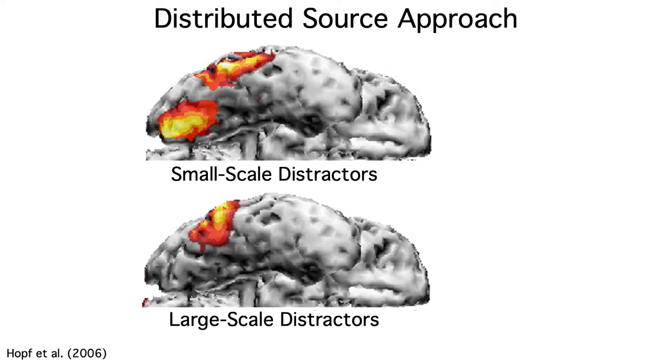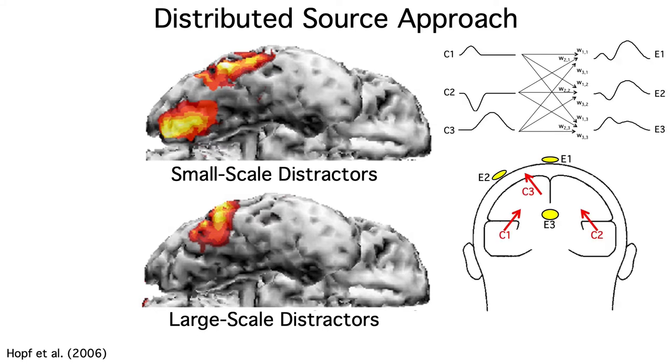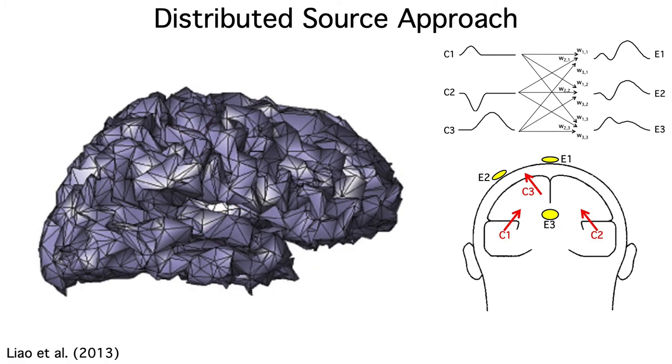The other main method is called the distributed source approach. This is a generalization of the basic model of voltage propagation that we've been talking about all along, where the voltage at a given electrode is equal to the weighted sum of all the source waveforms. But instead of a small number of dipoles, we take a structural MRI scan and tessellate the cortical surface into thousands of tiny patches.